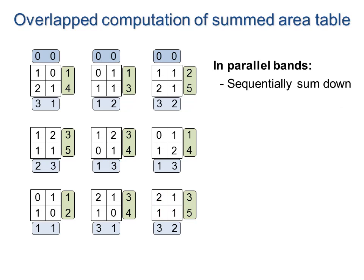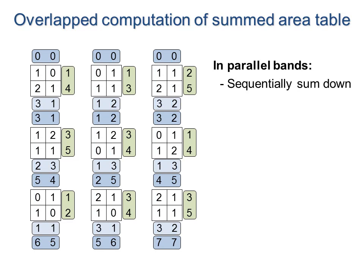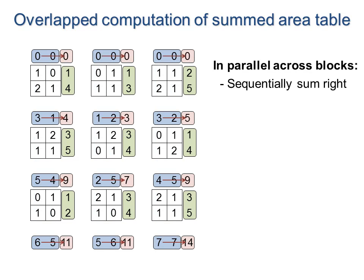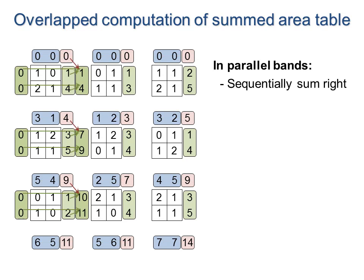We sequentially sum the lower bands. Next, we sum these horizontal bands to obtain a single corner value per block. We sequentially sum to the right, combining the green and pink values.